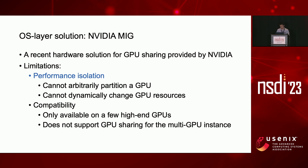NVIDIA MIG is another OS layer solution. MIG requires GPU hardware support and is currently only available on a few high-end GPUs. MIG cannot arbitrarily partition a GPU based on application needs. For example, an A100 GPU can be partitioned into GPU instances with separate compute and memory resources, but MIG only provides seven fixed configurations for each GPU instance, and each GPU instance cannot use more than half of the GPU memory resources. Furthermore, it cannot dynamically change GPU resources owned by instances if there are running jobs on the GPU, even if GPU usage changes. Reconfiguration of MIG can only happen when the GPU is idle, and MIG does not support memory oversubscription.